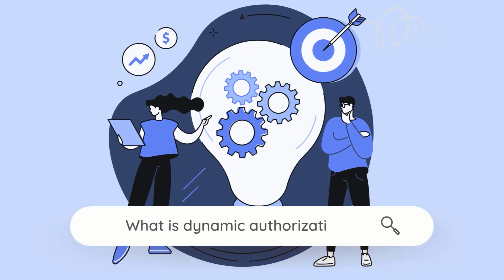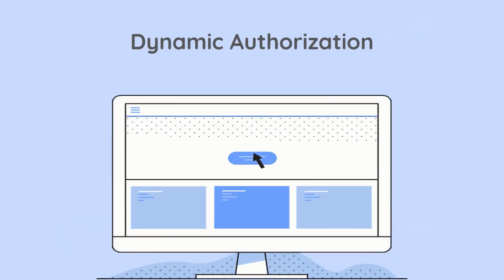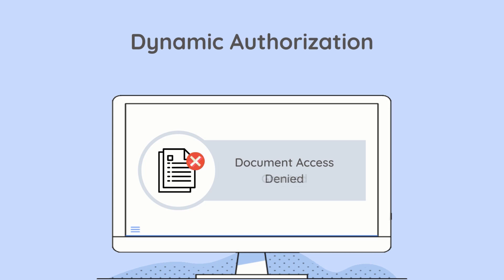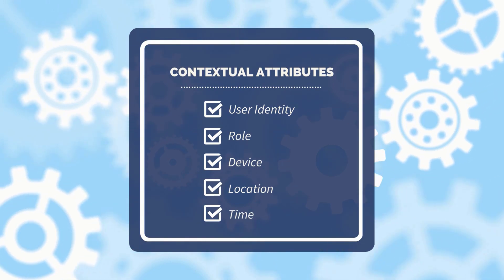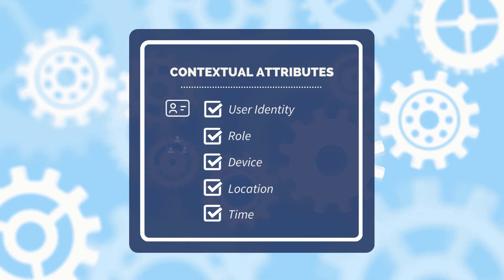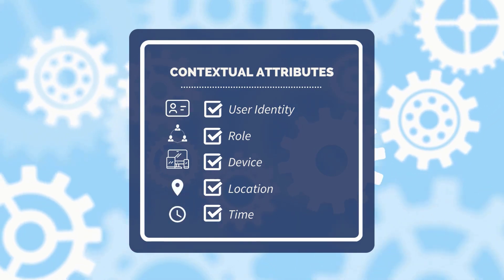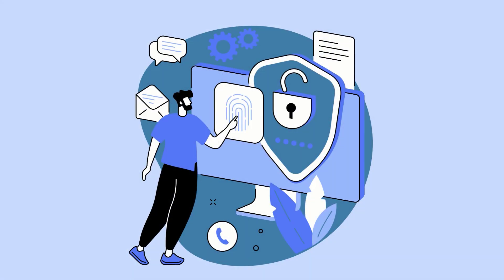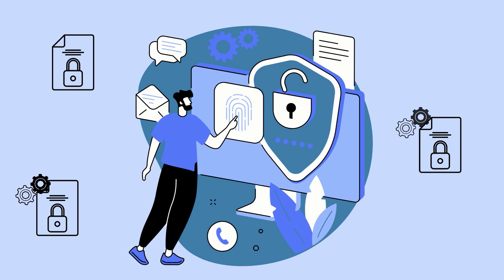What is dynamic authorization? Dynamic authorization is the process of granting or denying permissions to a resource or data based on a set of contextual attributes such as the user's identity, role, device, location, and time of day of the current request. It allows organizations to enforce fine-grained access and data security policies and respond quickly to changes in the environment or user behavior.